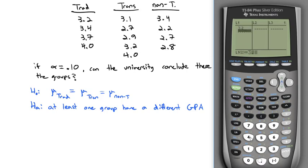In list one, I'm going to put the GPAs, 3.2, 3.4, 3.7, and 4.0. List two is my second group, 3.1, 2.7, 2.9, 3.2, and 4.0. The non-traditional group, 3.4, 2.2, 2.7, and 2.8.